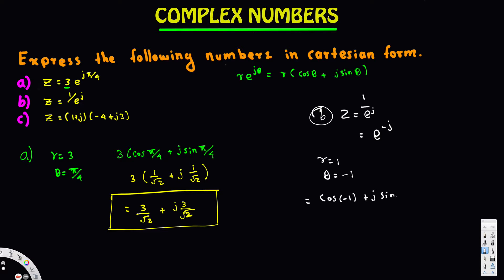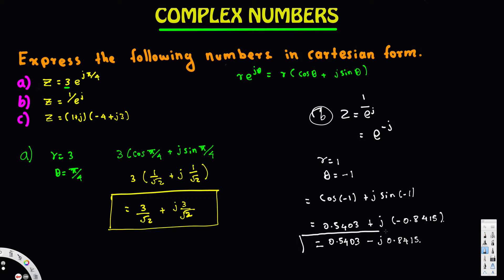Calculating: cos(-1) equals 0.5403, and j·sin(-1) equals negative 0.8415. So the rectangular form is 0.5403 - j·0.8415. That's the rectangular form of this complex number.